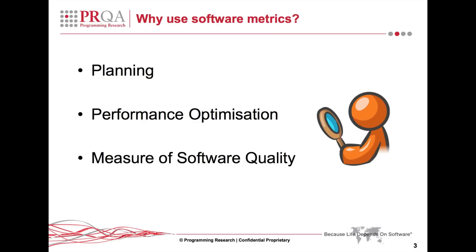So, why should we use software metrics? They help in the planning of the project, and used early in the cycle — for example, in the requirements and design phases — can avert future quality issues. They are an aid to performance optimisation, and most commonly are considered a measure of software quality.